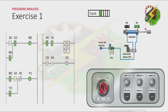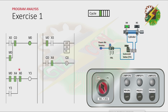Now the cylinder reaches the fully extended position. That will cause X5 to turn on. And because X5 turns on, it will cause the count value of counter 0 to increase. The normally closed contact of X5 will open, which will cause Y3 to turn off and the cylinder to retract. Then because the cylinder retracts, it will cause X4 to turn on again. And because M0 is on, it will cause Y3 to turn on again, and the cycle will repeat.